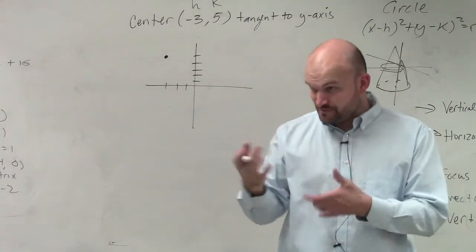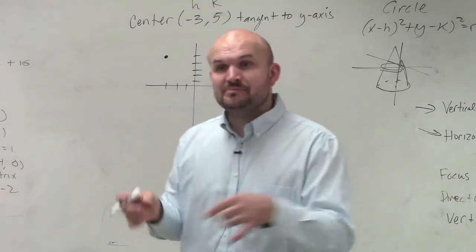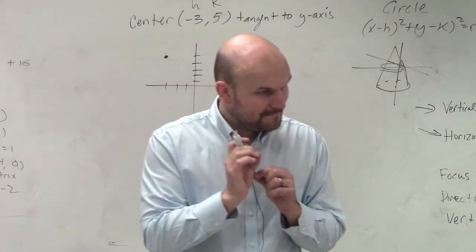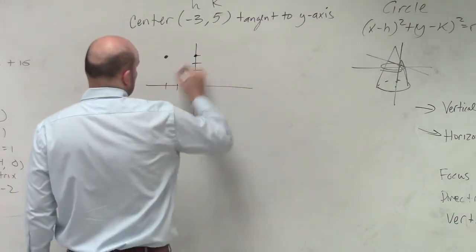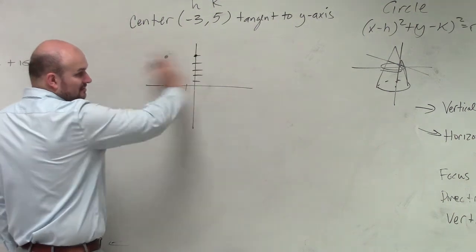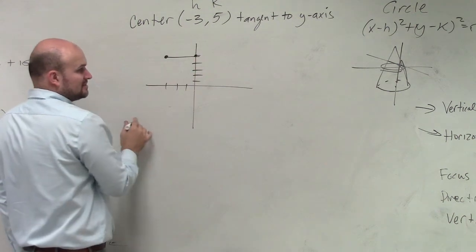Now, again, remember tangent from your geometry days. Tangent means it touches the y-axis at exactly one point. So it's going to touch at that point, because if it touched at any other point, you would cross it again, right? So the direct path to it is going to be your tangent.